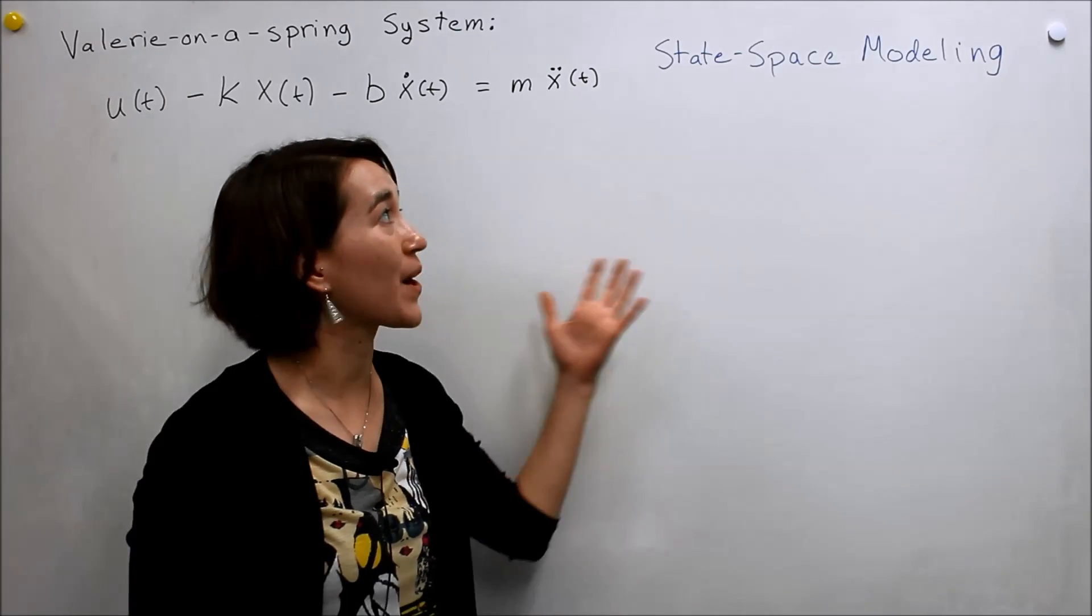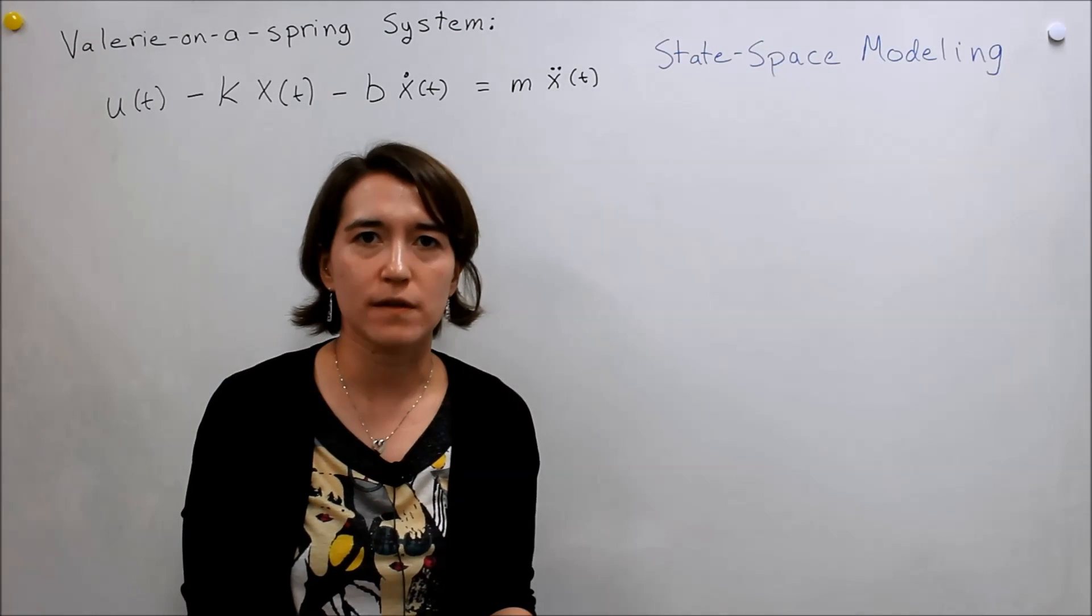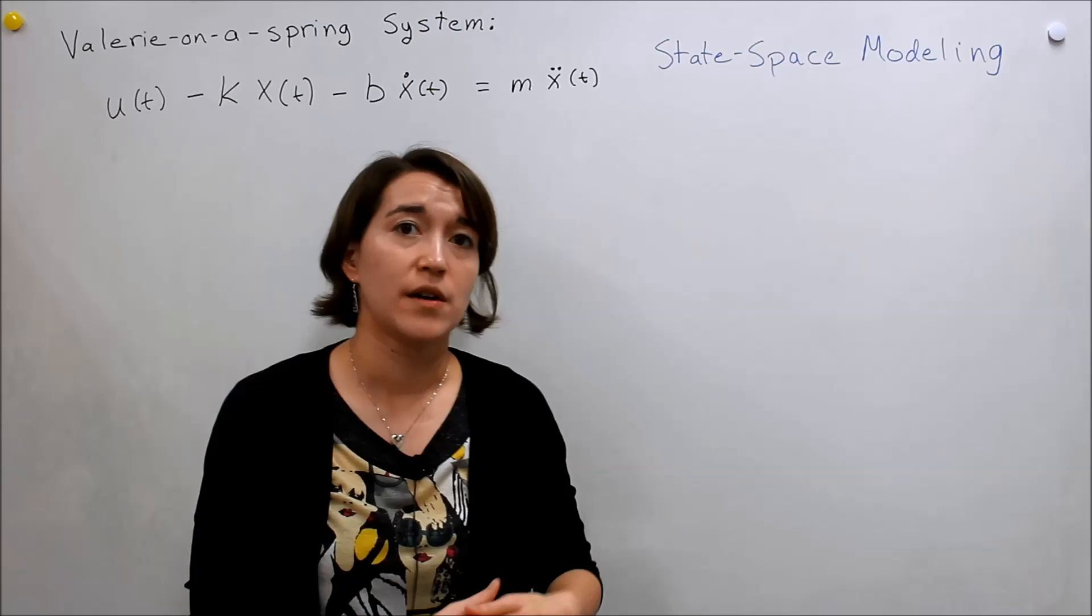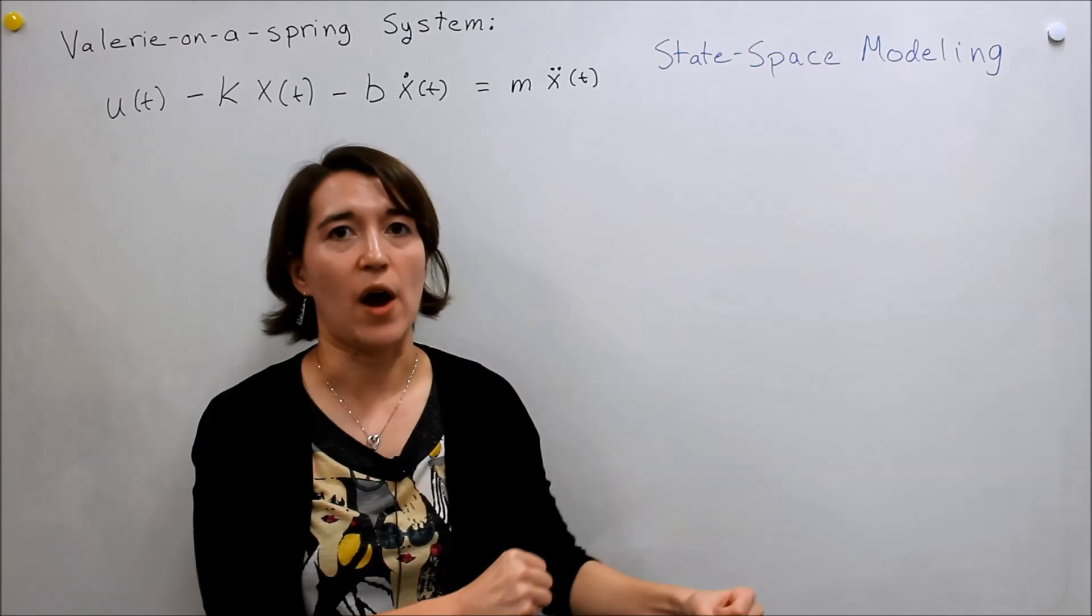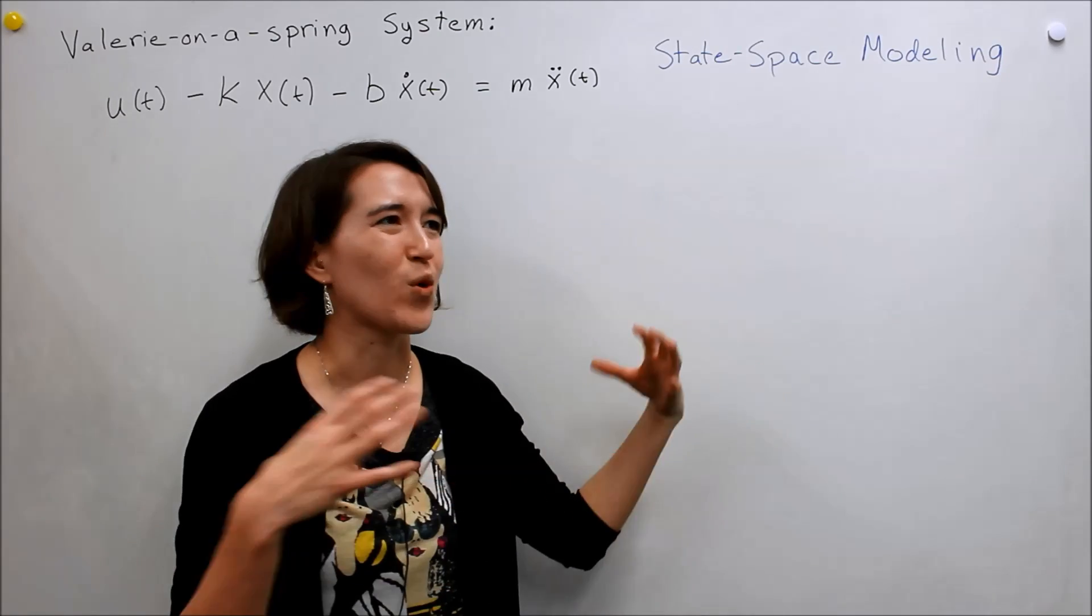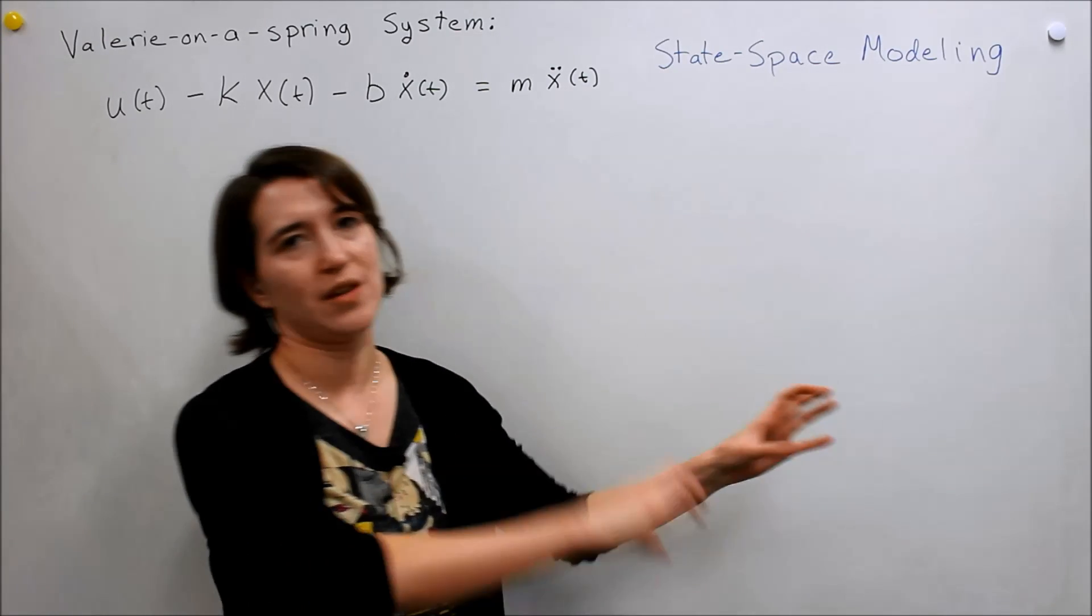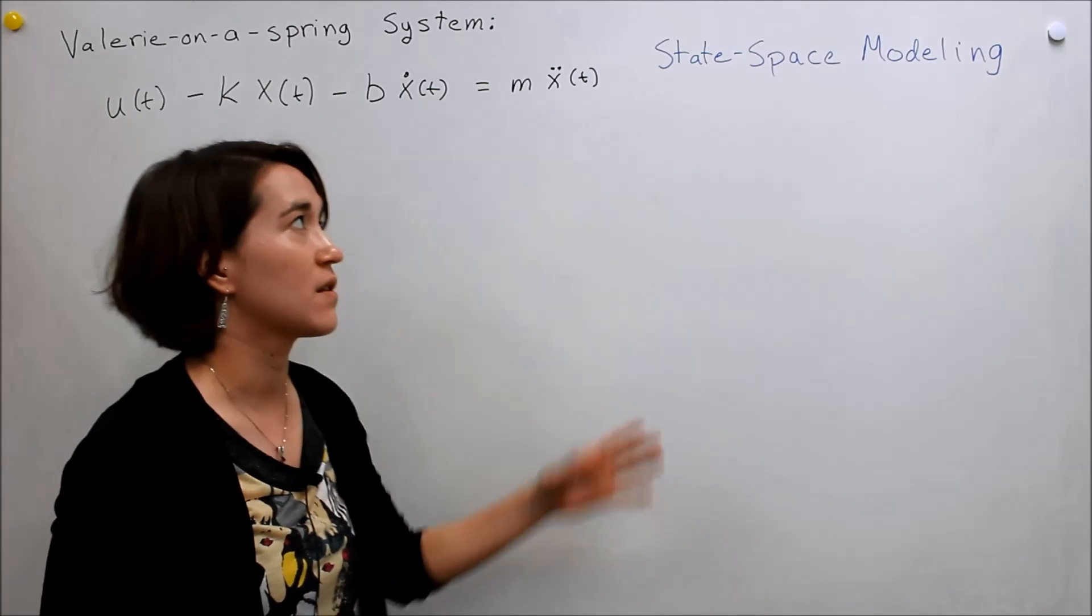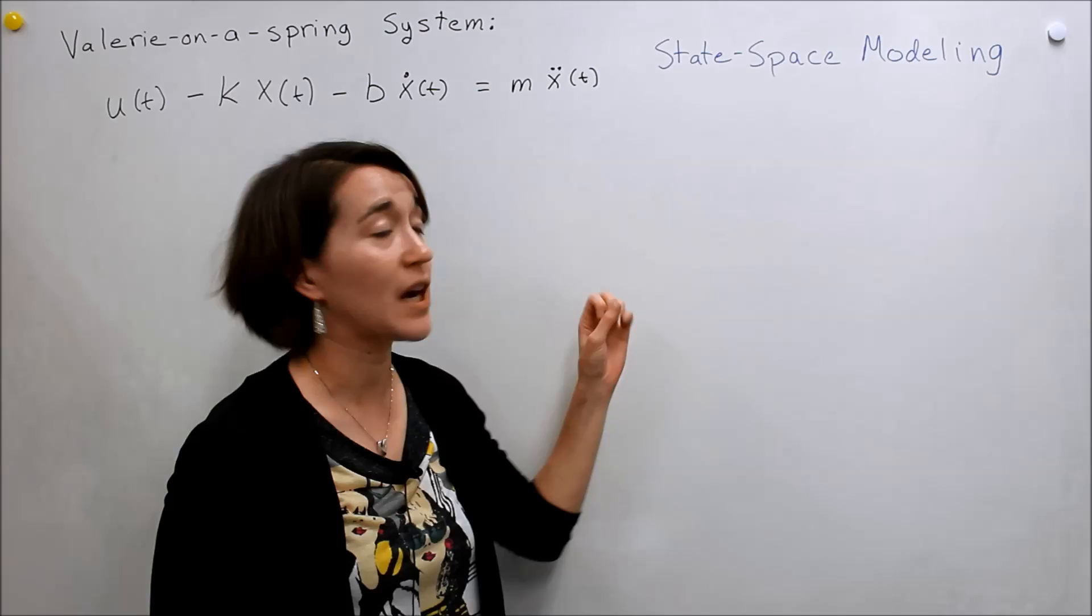Our next topic will be state-space modeling of systems. This is essentially a different way to transform the equation for a system, and when we use state-space we can use different tools to analyze it. We talked about the transfer function where you have to know your input and output and put it in terms of just those equations. This is a more holistic approach. You can model the system as it is, and then use another equation to say this is the output. This way you can have multiple inputs and multiple outputs. So this is more used for complex systems, and it's a very powerful modeling tool.